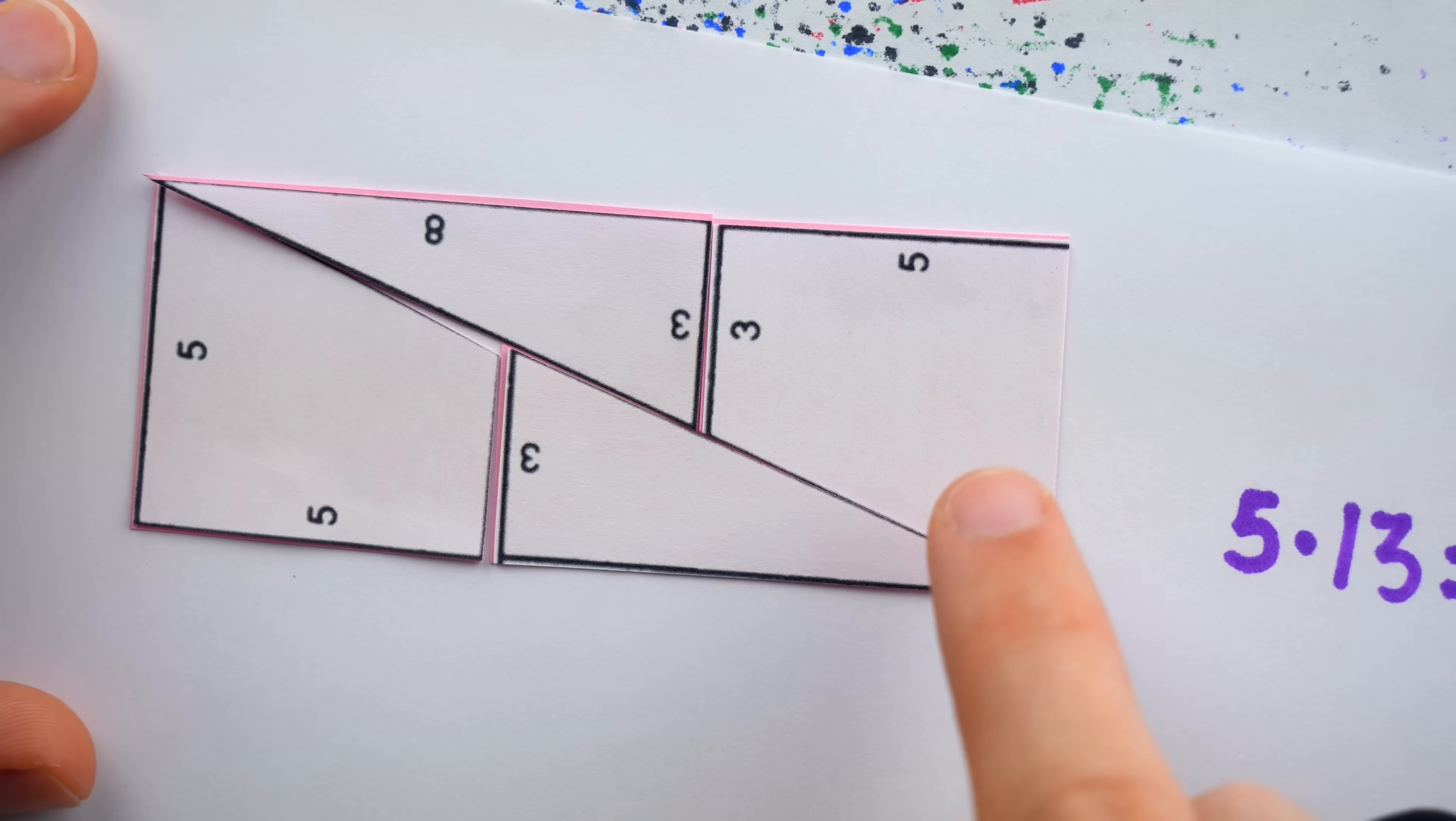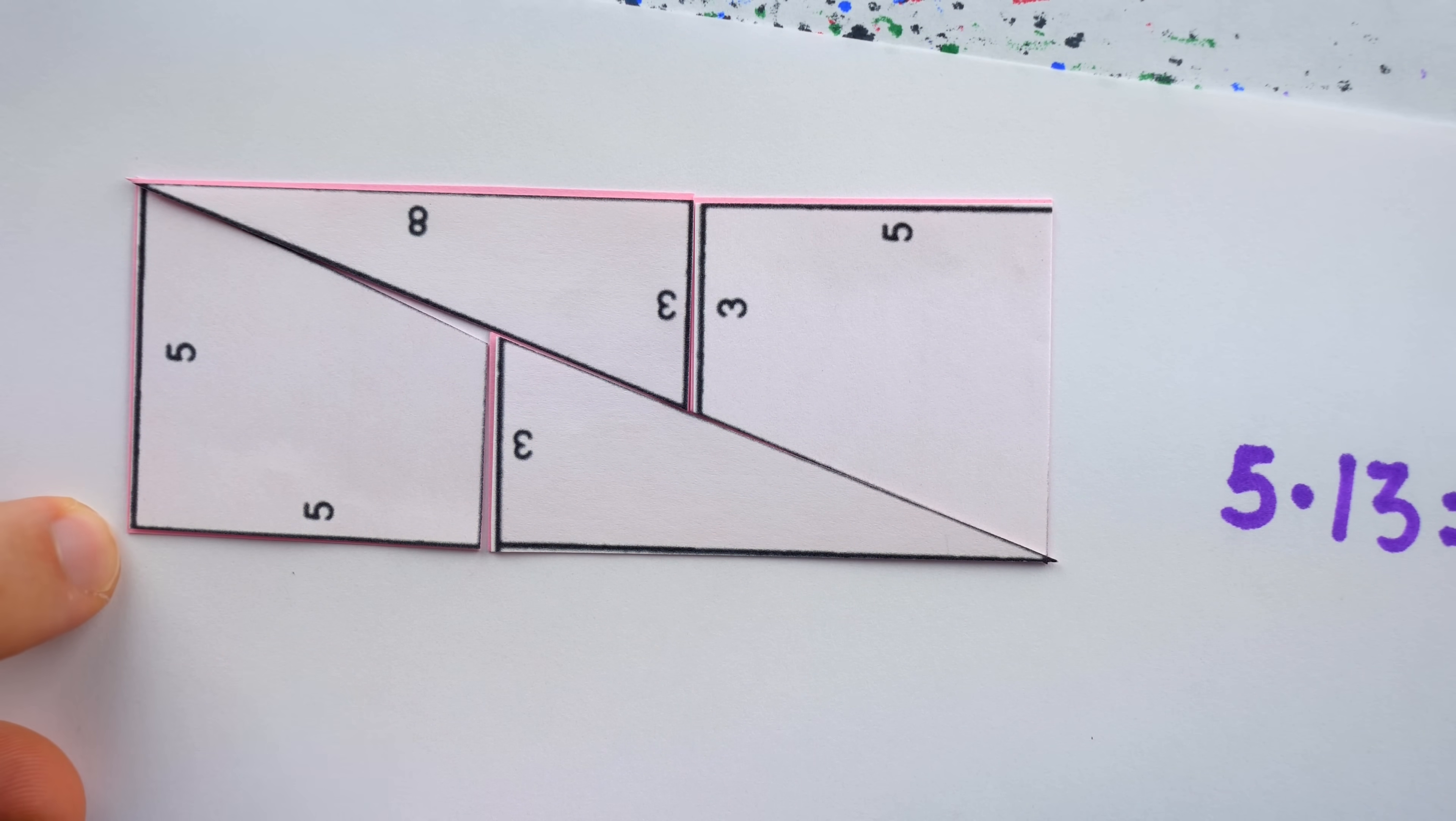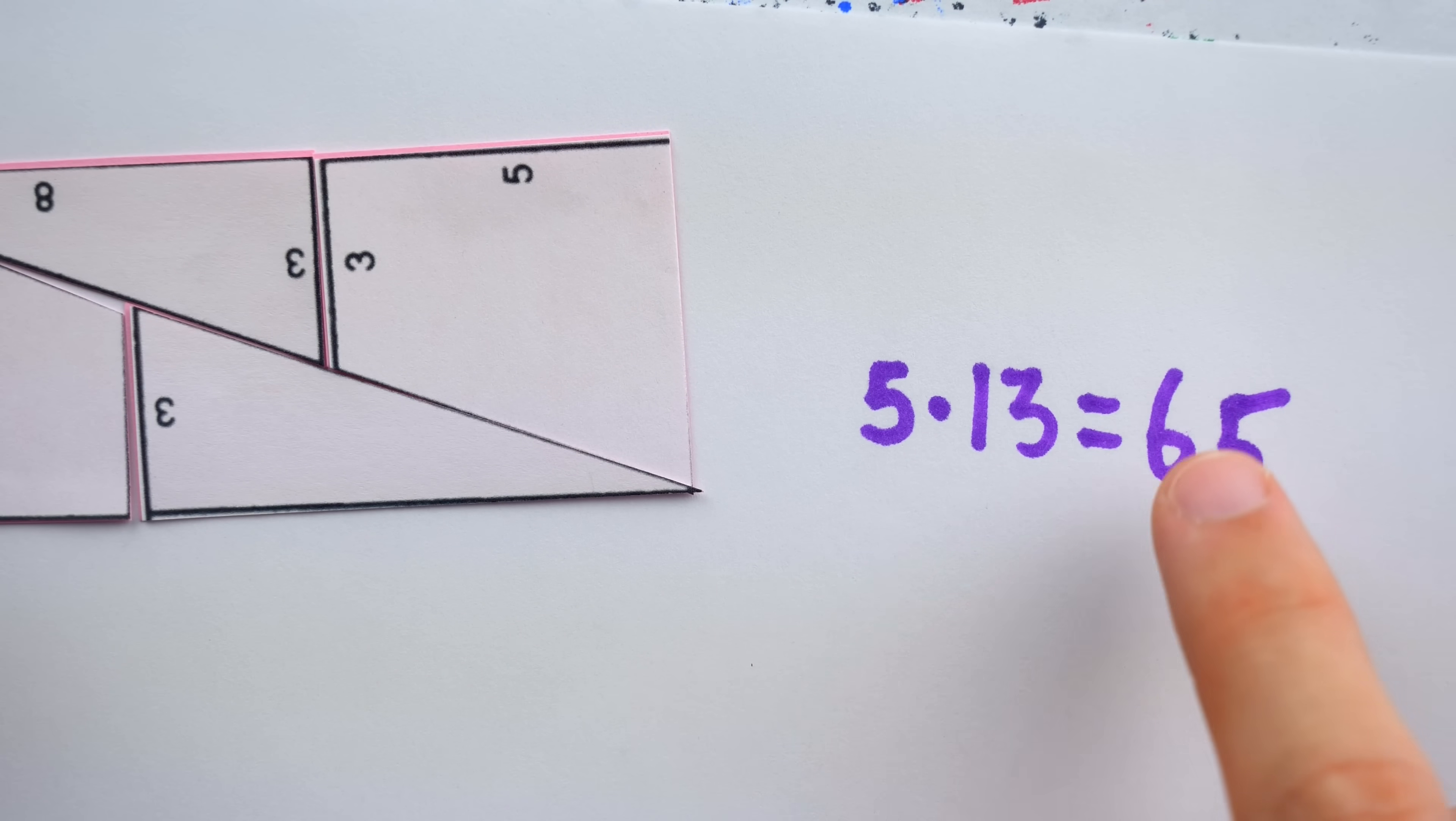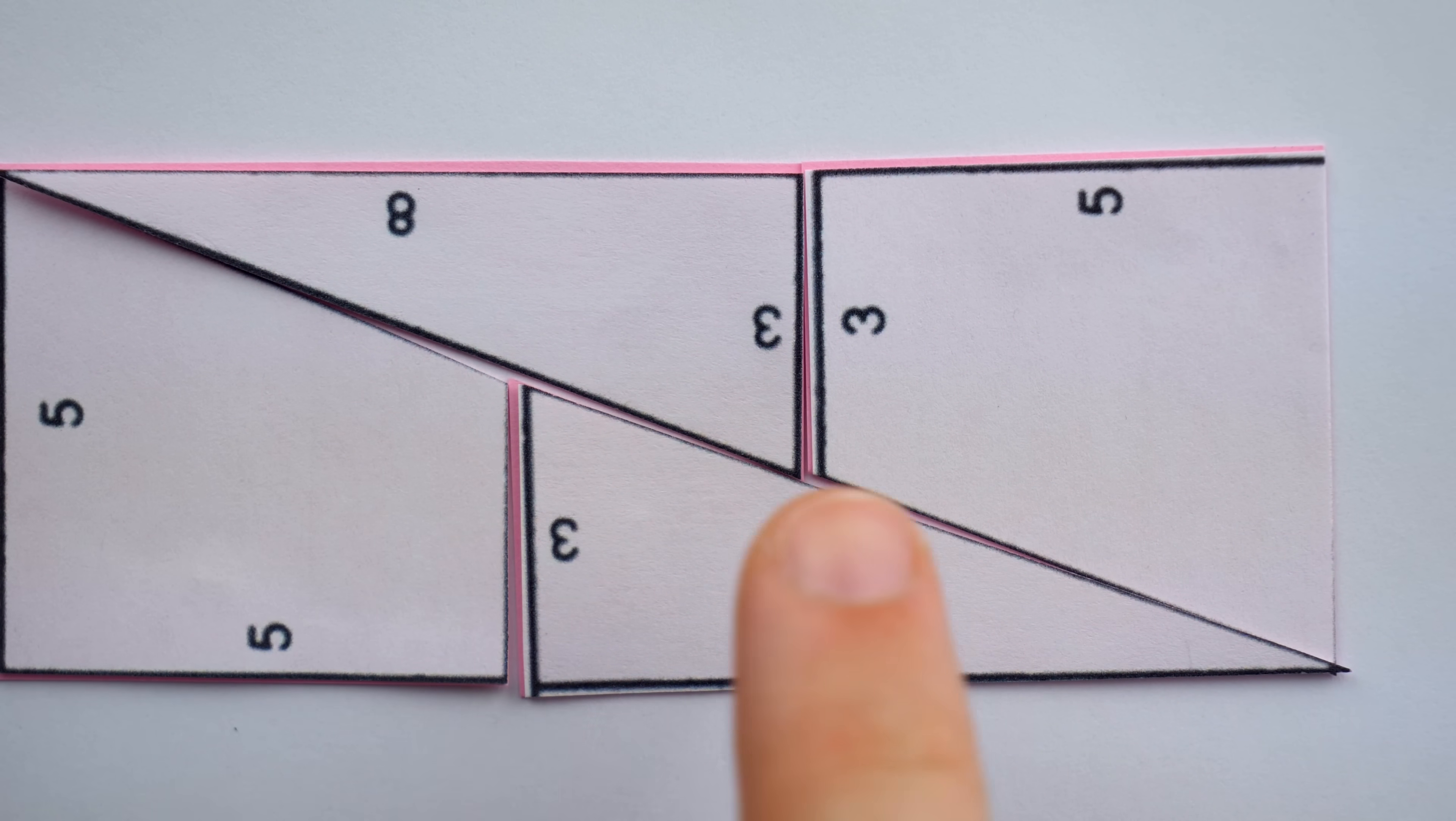Indeed, the math tells us that these square pieces don't actually fit exactly to make a rectangle, and that although it looks like they make a 5 by 13 rectangle, they are missing one square unit of area. And as it turns out, that missing area is hidden in the diagonal.